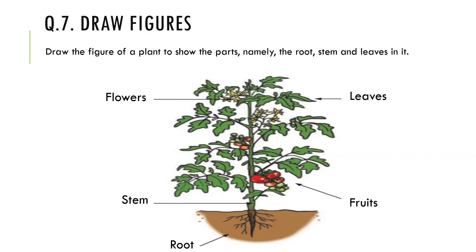Question number 7 — Draw figures. Draw the figure of a plant to show the parts namely root, stem, and leaves. I have drawn a normal diagram of the plant — you can draw any diagram of a plant showing its various parts. But remember, you have to label the diagram. If you don't label it, it will become just a drawing and will not give you marks. So label leaves, fruits, roots underground, stem, and flowers.